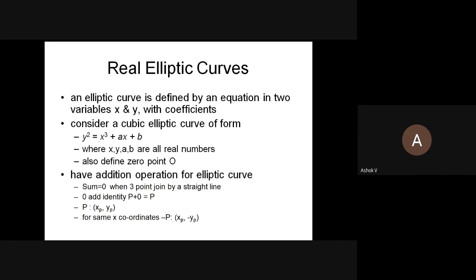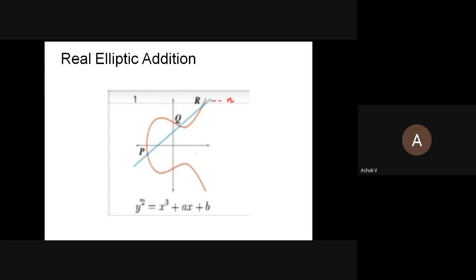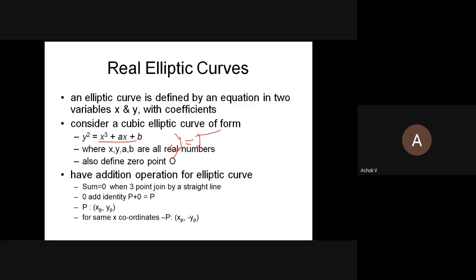When you are plotting the curve, you get a symmetric curve and y equals zero here. Now for the rules for addition using real numbers: when you plot the curve using the equation y² = x³ + ax + b and draw a straight line, it will meet at least three points P, Q, and R. If three points are joined by a straight line, we say it is symmetric and the sum of the three points P + Q + R equals zero.